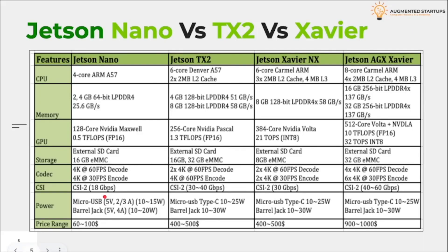There are several variants of the Jetson available in the market. The most popular devices are the Jetson Nano, the Jetson TX2, the Jetson Xavier NX, and the Jetson AGX Xavier. The AGX Xavier is the latest version with the most powerful features. The Jetson Nano has a four-core ARM processor, whereas the TX2 and the Xavier NX have a six-core ARM processor that is much faster. The TX2 also contains two L2 caches of 2MB size, whereas the Xavier NX has three L2 caches of the same size.